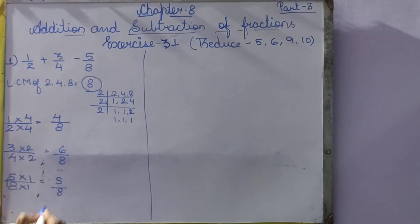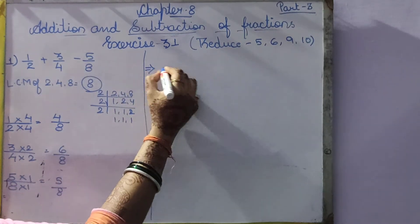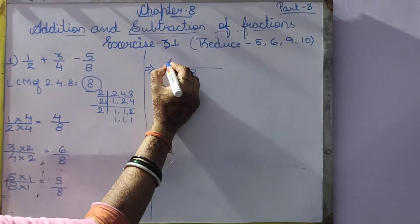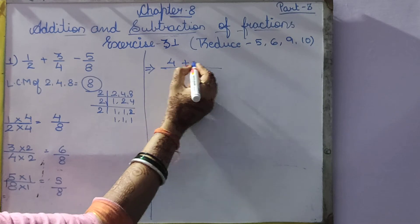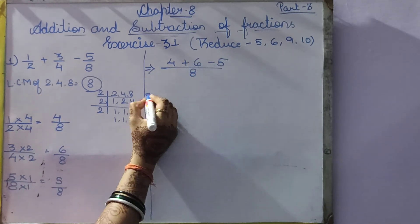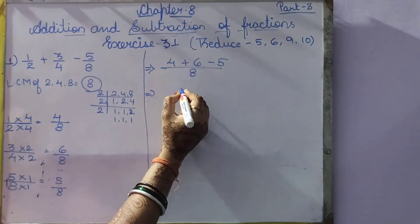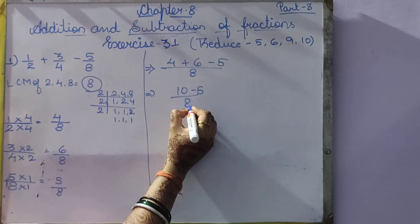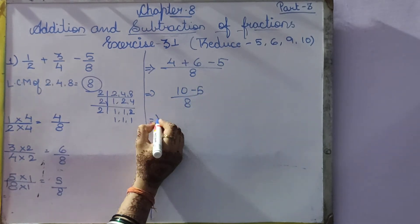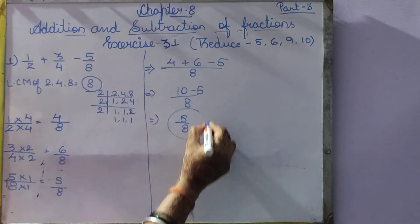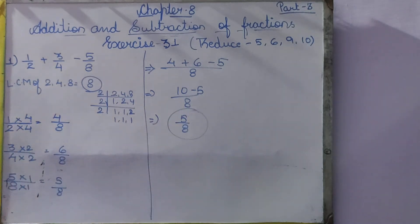We have got the same denominator of 8 for all 3 fractions. Now 4 plus 6 minus 5: 4 plus 6 will be 10, and 10 minus 5 divided by 8. So 10 minus 5 will be 5. The answer is 5 by 8.